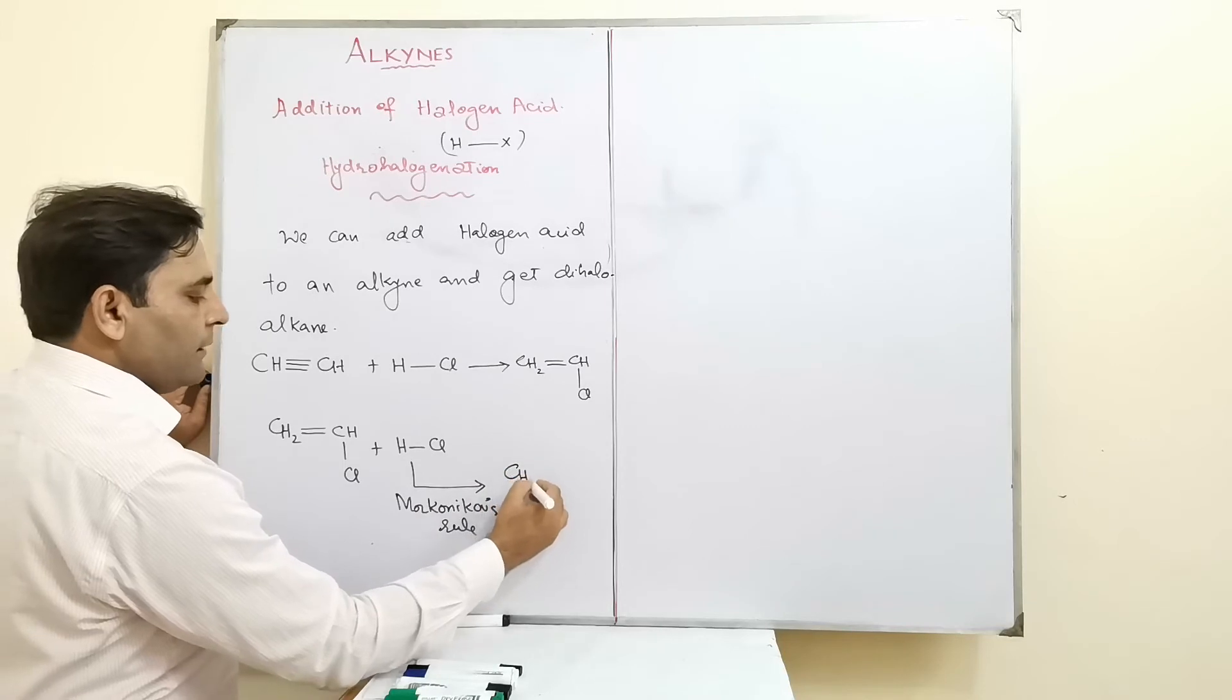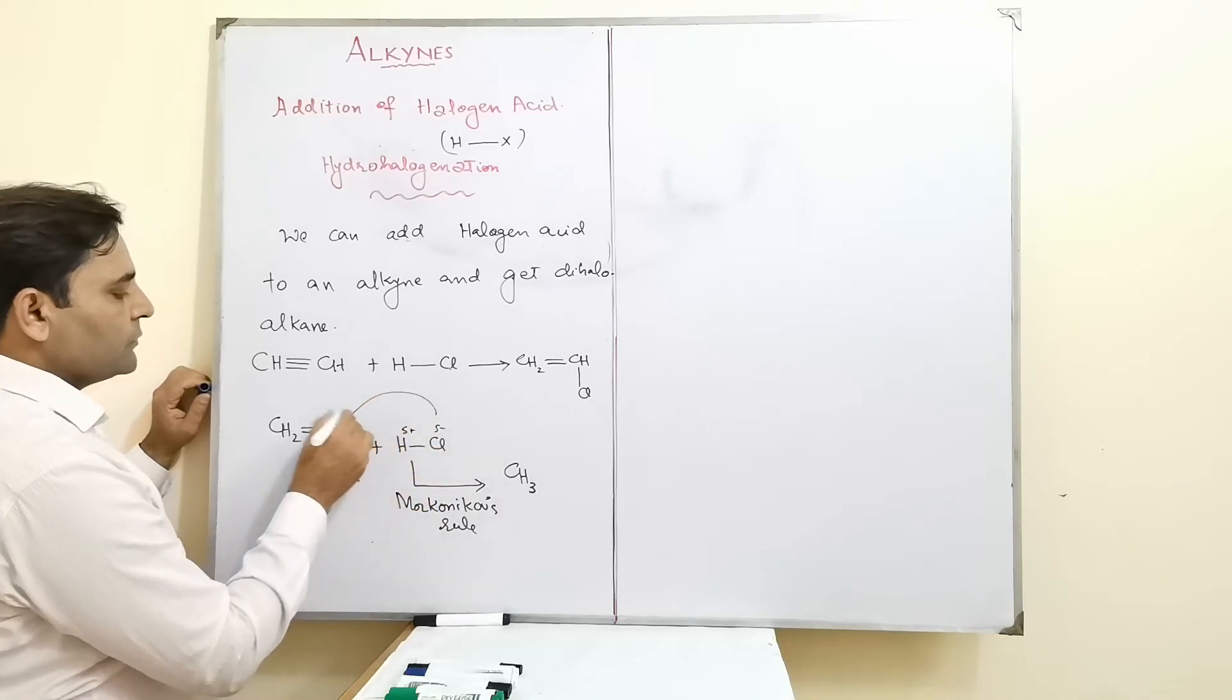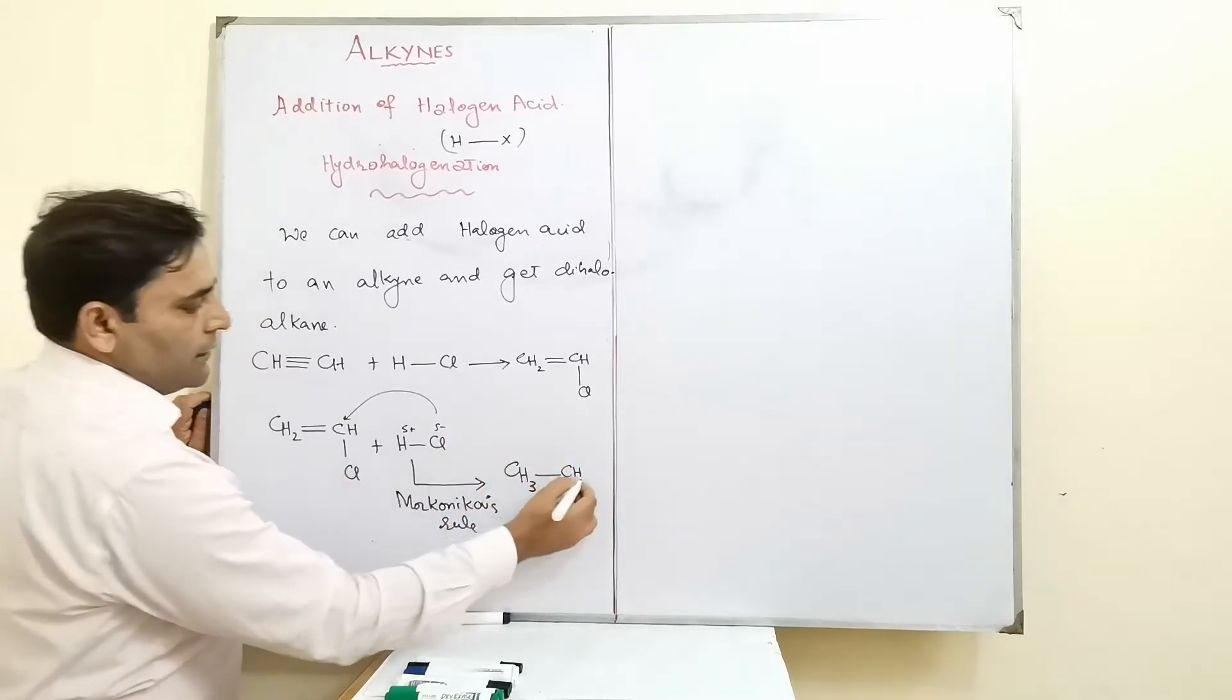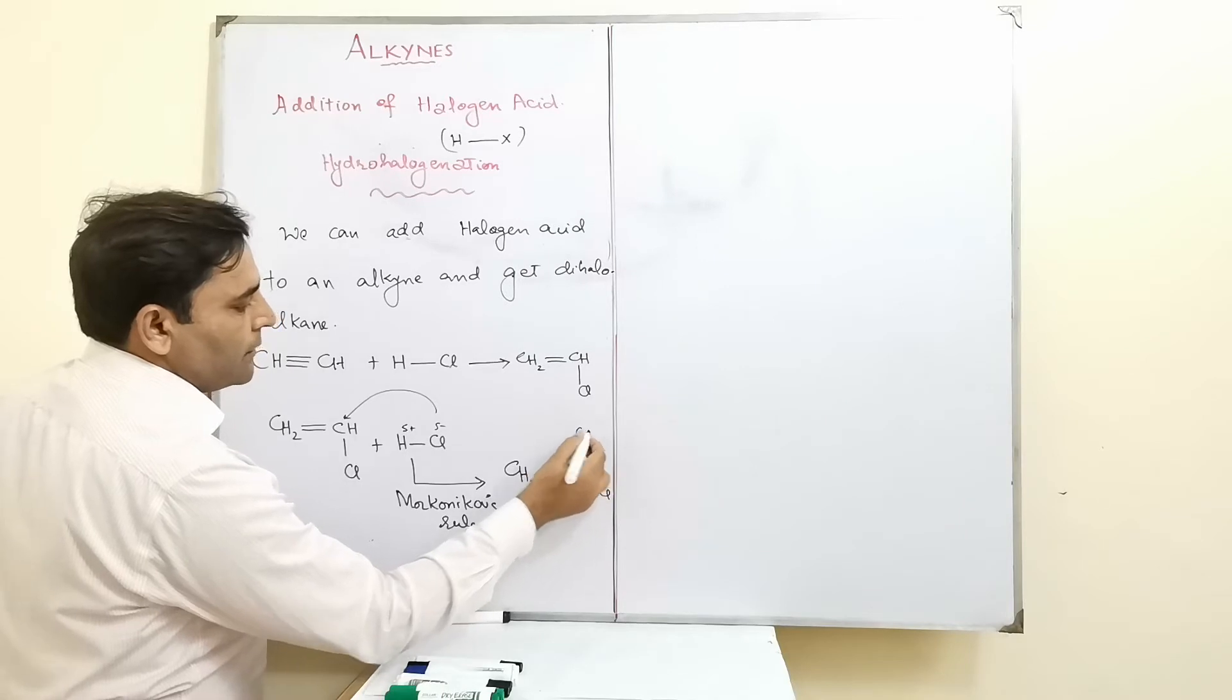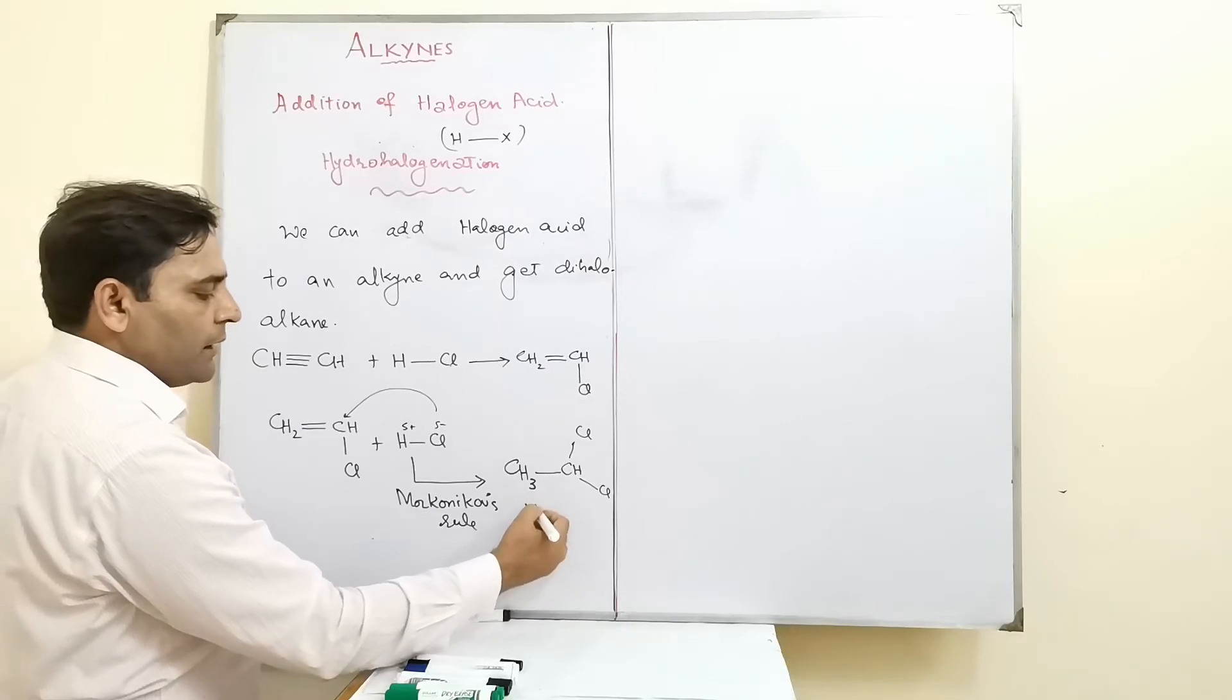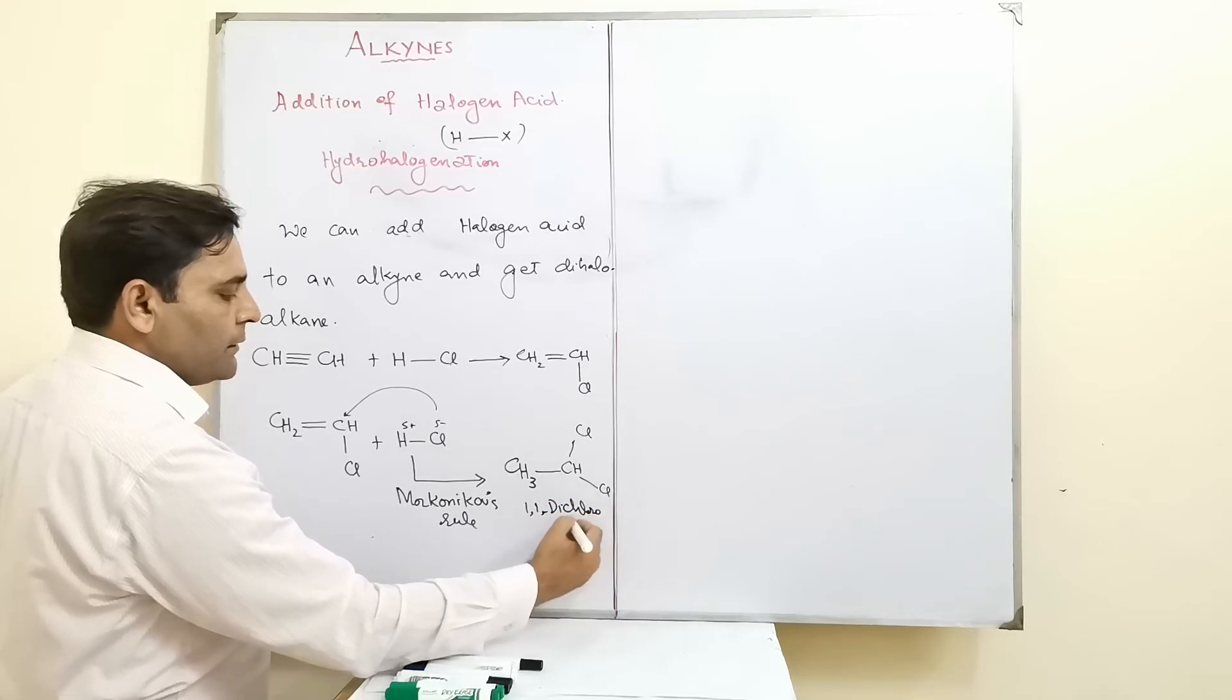On this carbon we have to add hydrogen. The negative part goes to the carbon which has the least number of hydrogen atoms. Chlorine we put here, down side or up side. This is our dihaloalkene, or you can say 1,1-dichloroethane.